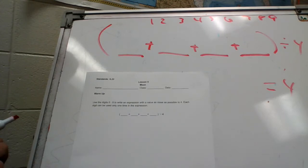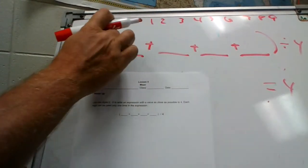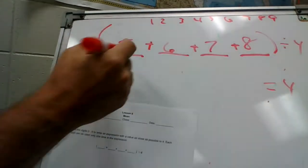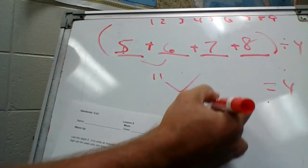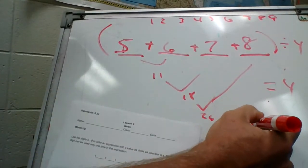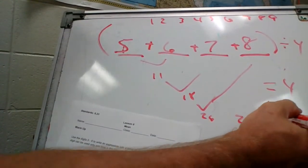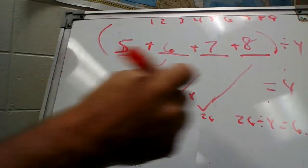So all we're going to do, let's do five, six, seven, eight. Okay, so that's 11, that's 18, 26. So 26 divided by four, that is what? Six point something. Okay, so that's not equal to four.